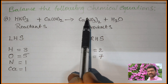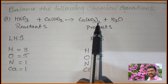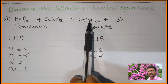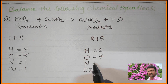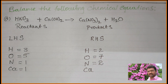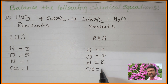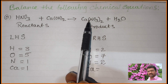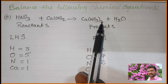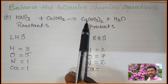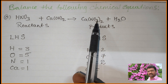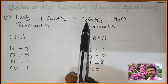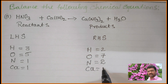For nitrogen: the nitrogen atom is within the bracket in Ca(NO3)2, so we multiply 2 into N = 2 nitrogen atoms on the RHS. For calcium: the 2 belongs only to the nitrate group — do not multiply it to calcium. So there is only 1 calcium atom on the RHS.